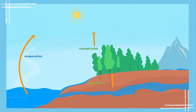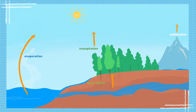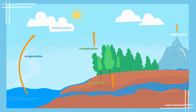When water is in its solid form, like in the ice caps and glaciers, it evaporates through a process called sublimation. As the water vapor rises up in the atmosphere, it gets cooler and turns into water droplets, and through condensation, clouds will begin to form.